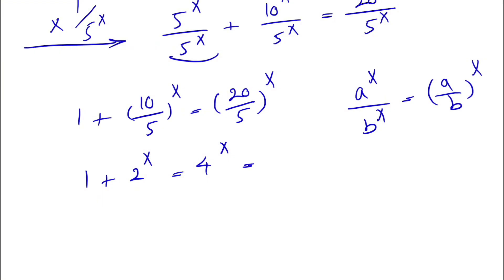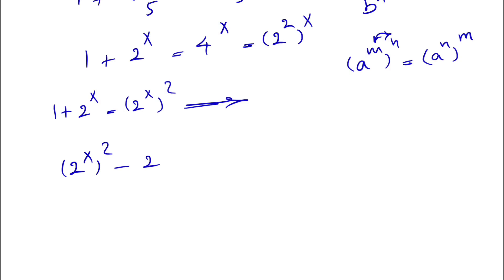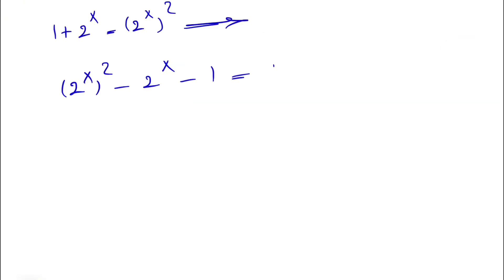For 4^x, we can write it as (2^2)^x, and using the exponent law (a^m)^n = a^(mn), we can rewrite this as (2^x)^2. So the equation becomes 1 plus 2^x equals (2^x)^2. Bringing everything to one side, we subtract (1 plus 2^x) from both sides and get (2^x)^2 minus 2^x minus 1 equals 0.